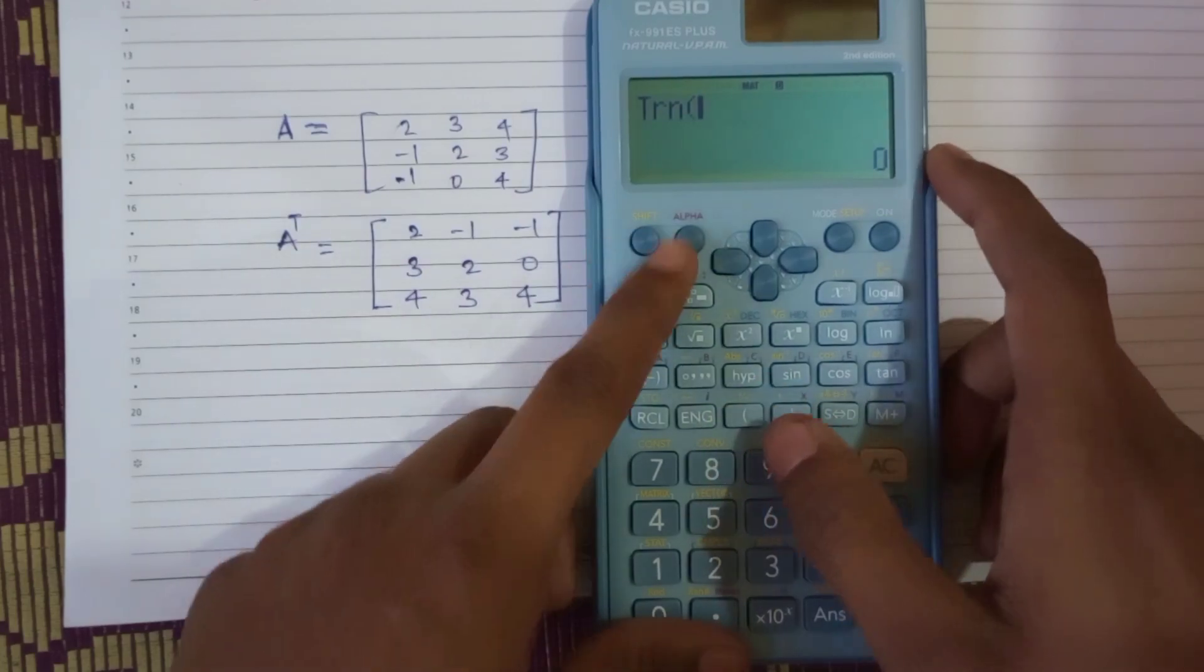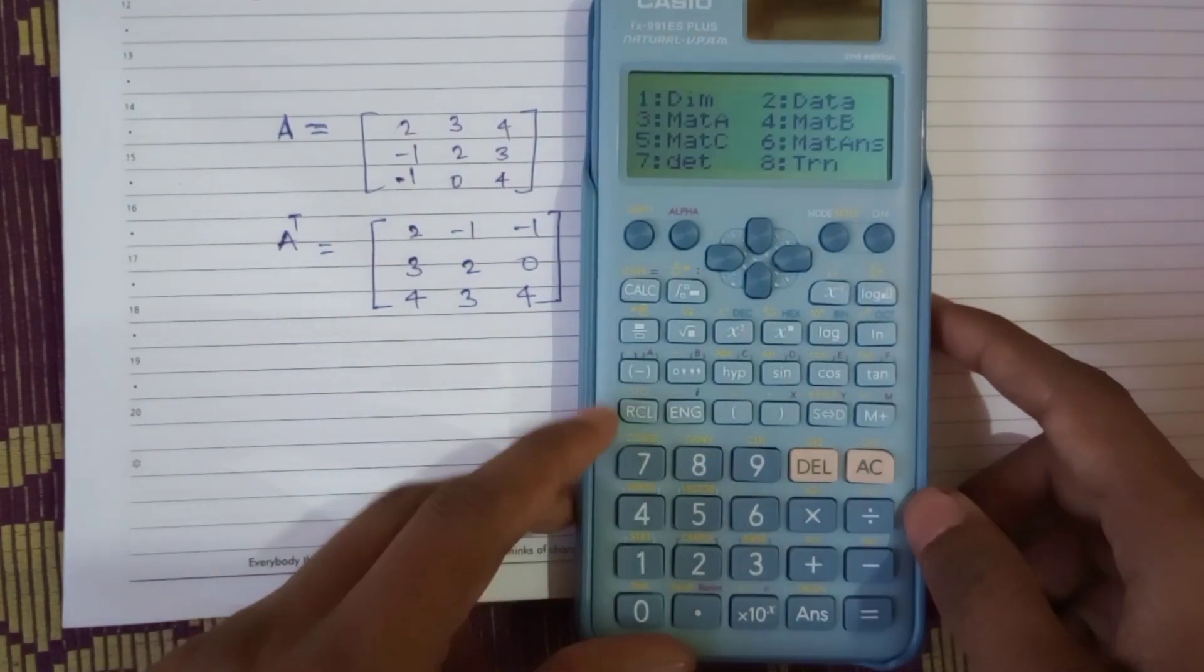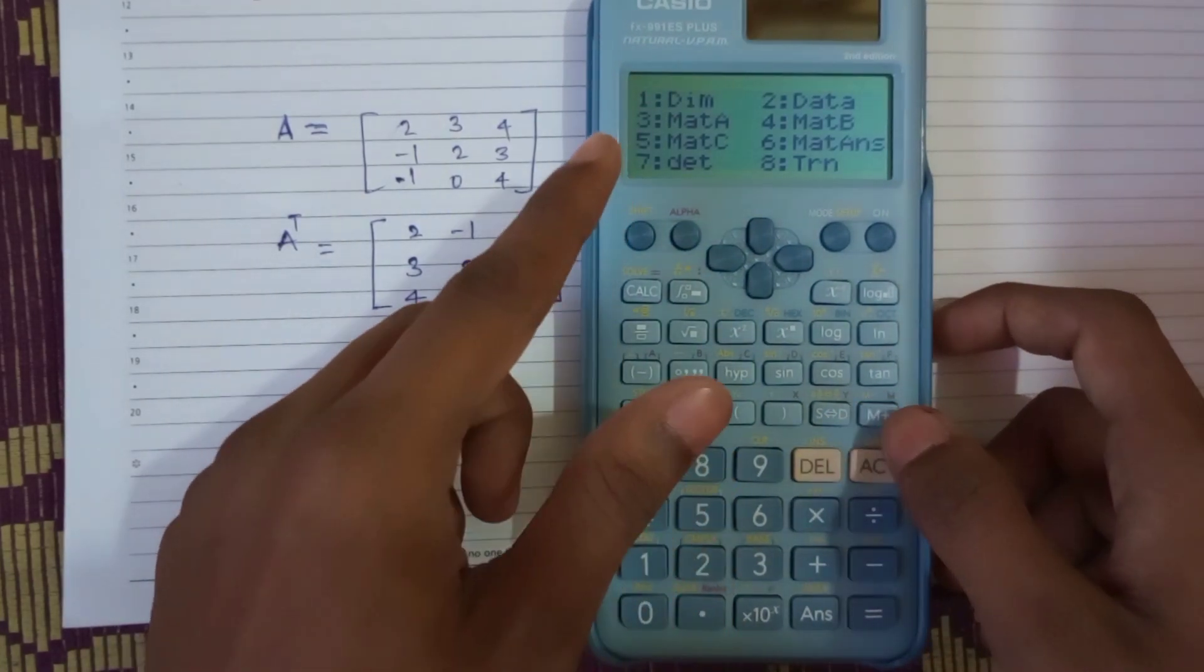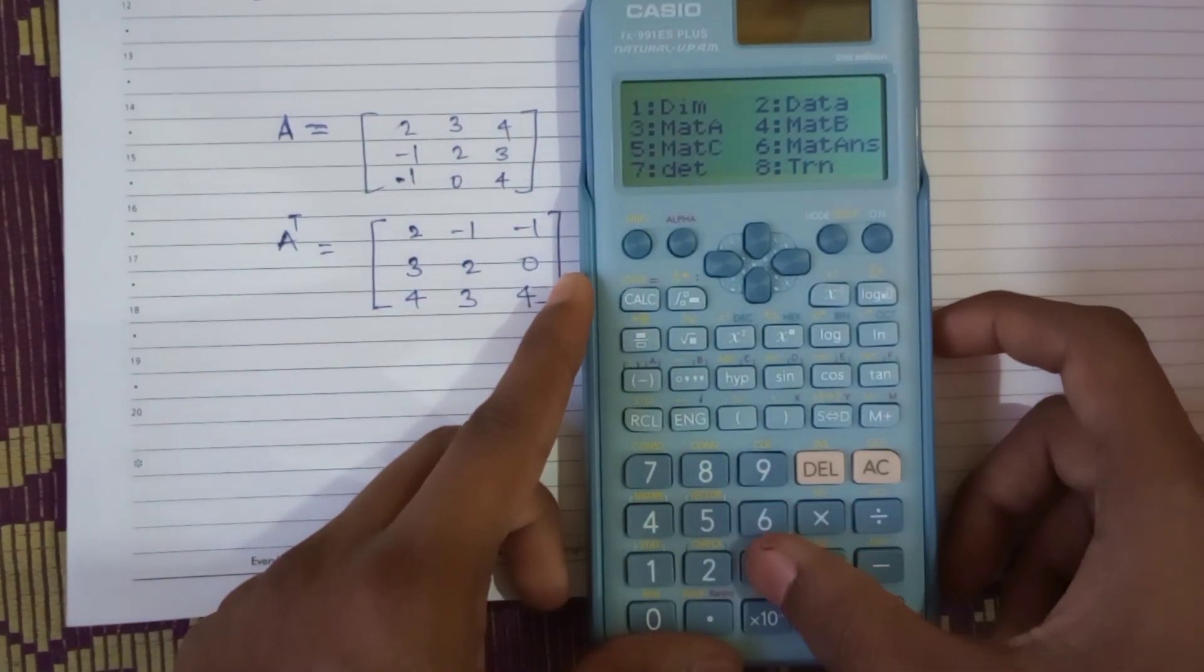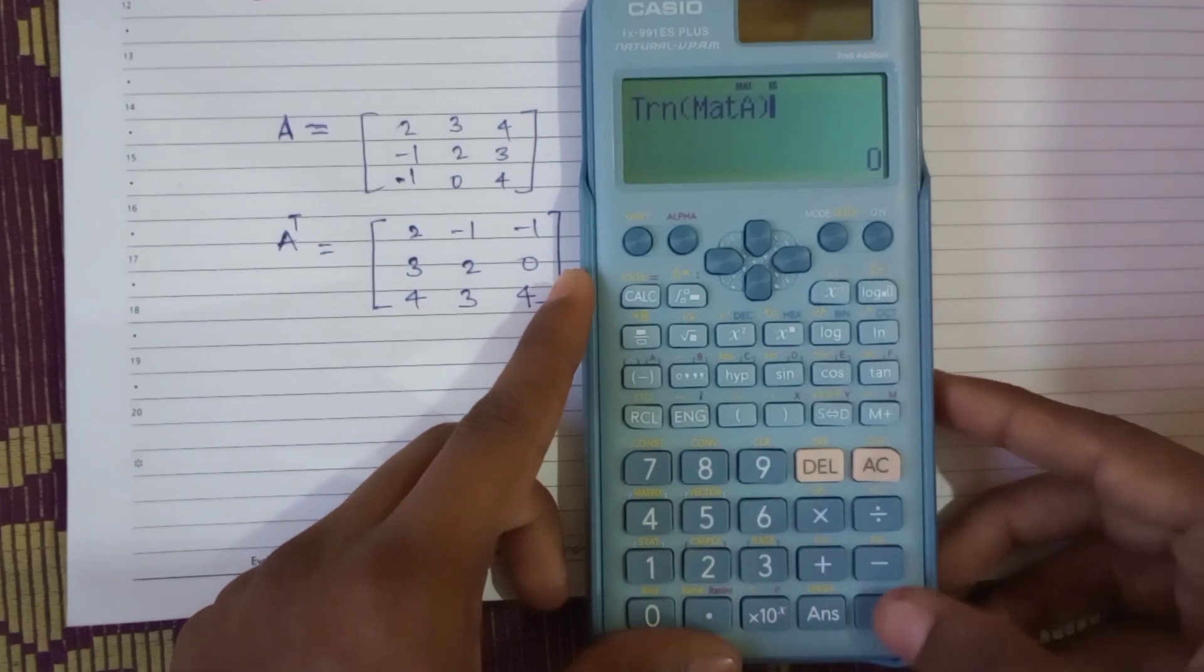Now you have to just press shift and 4 again and you have to select the matrix which we have inputted the values. That is 3, and close the bracket. And there you go.